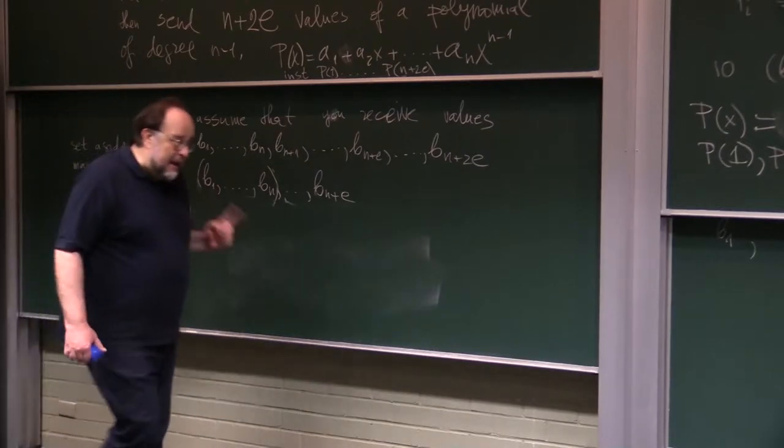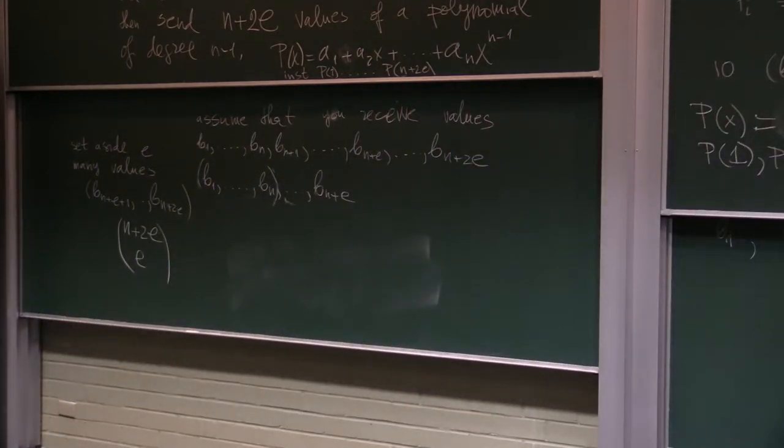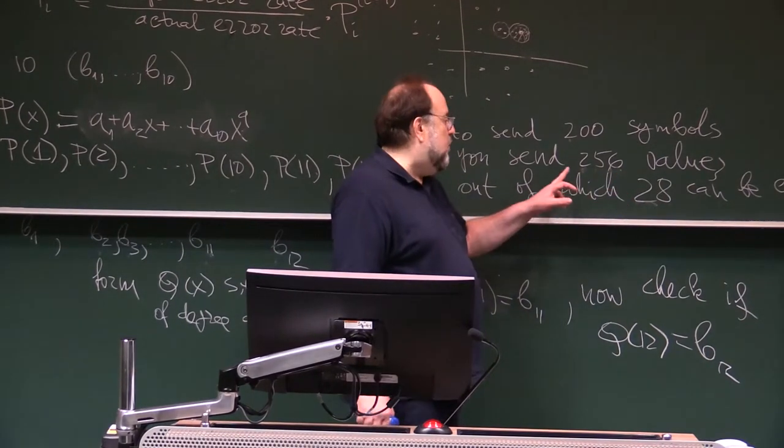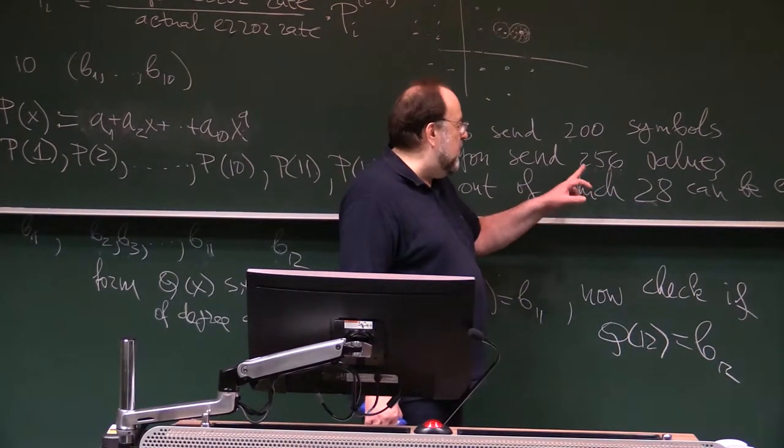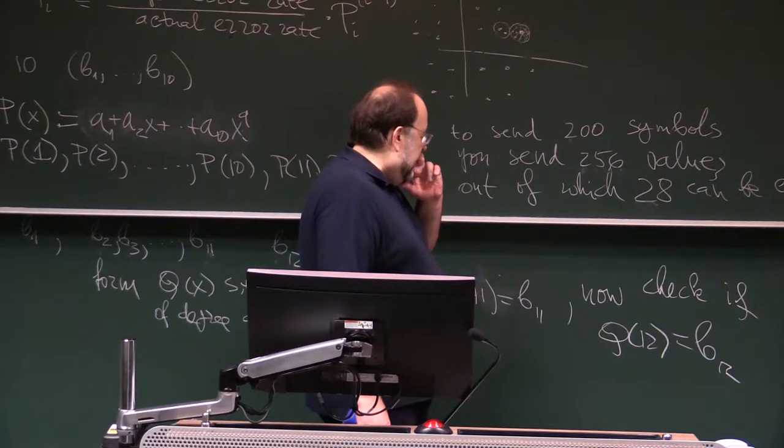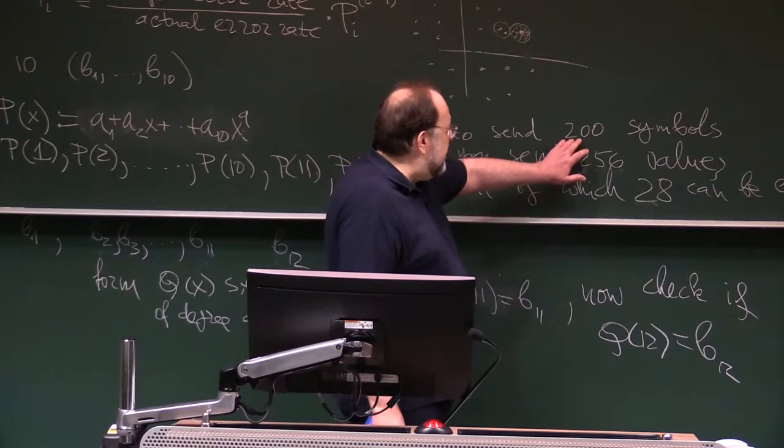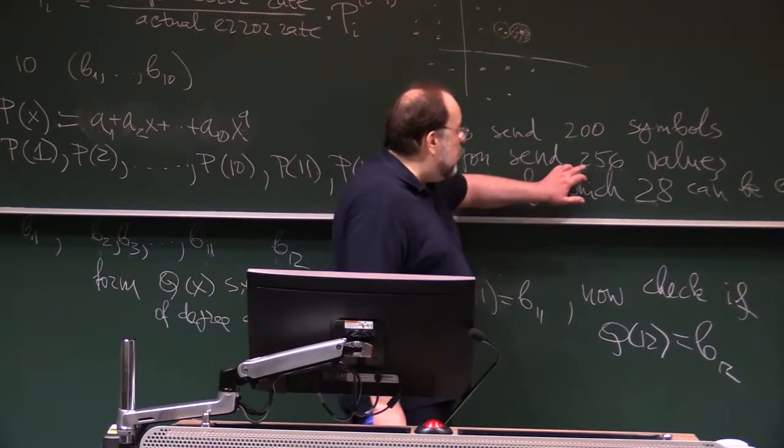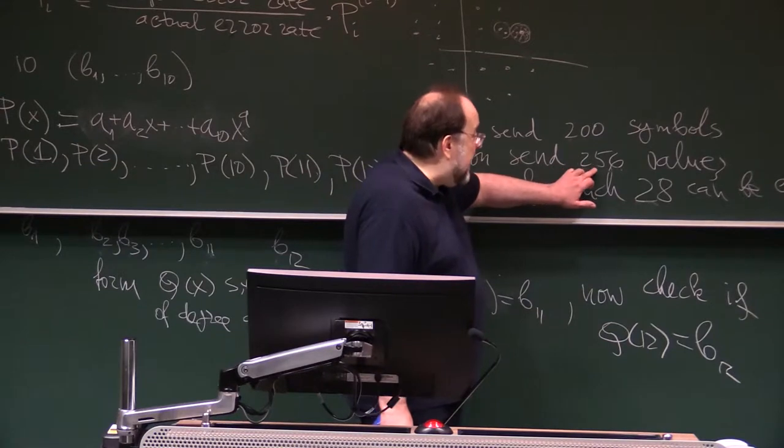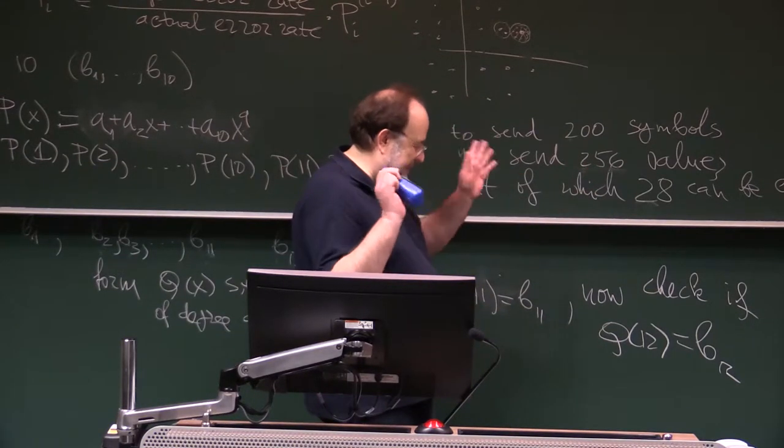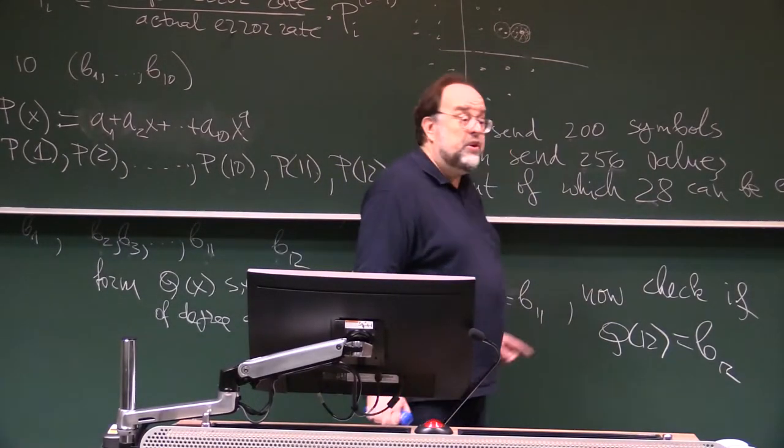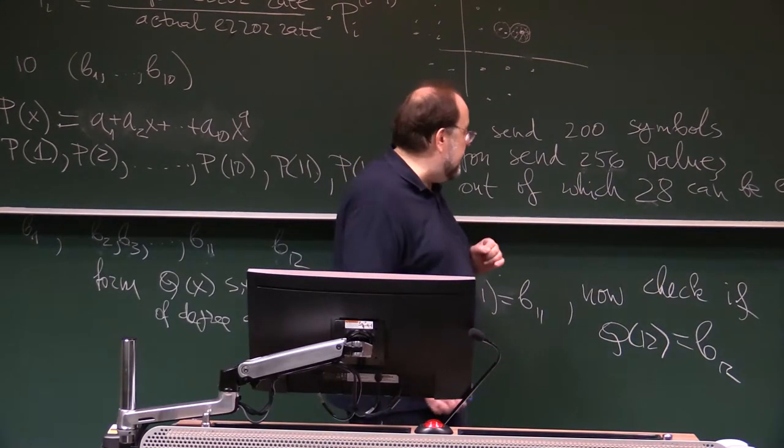In practice, the numbers are standard. Because this is just 8 bytes, what you are going to send is, you will send 200 bits out of, by sending 256 bits, out of which you can afford 28 to be wrong and still uniquely determine it.